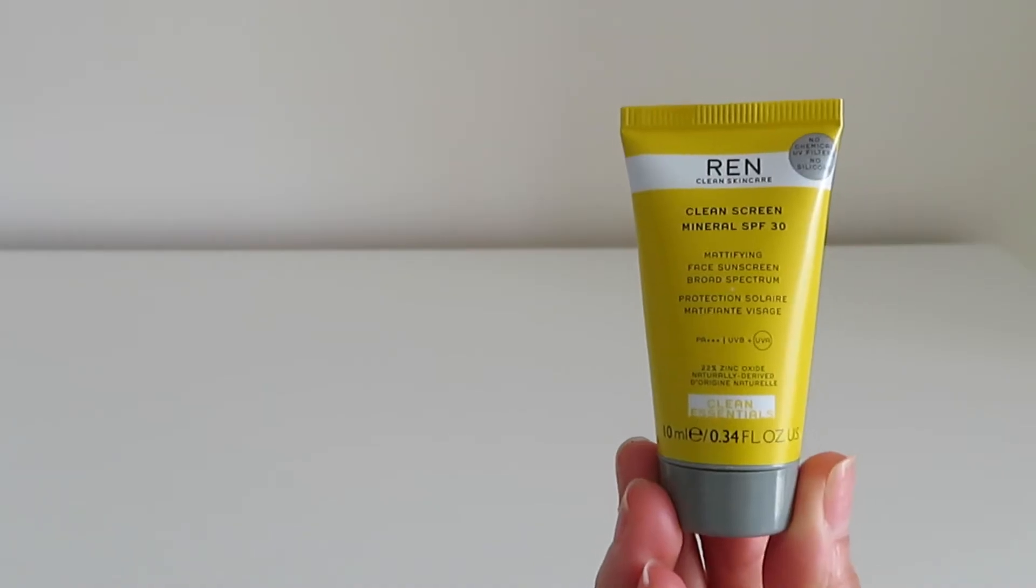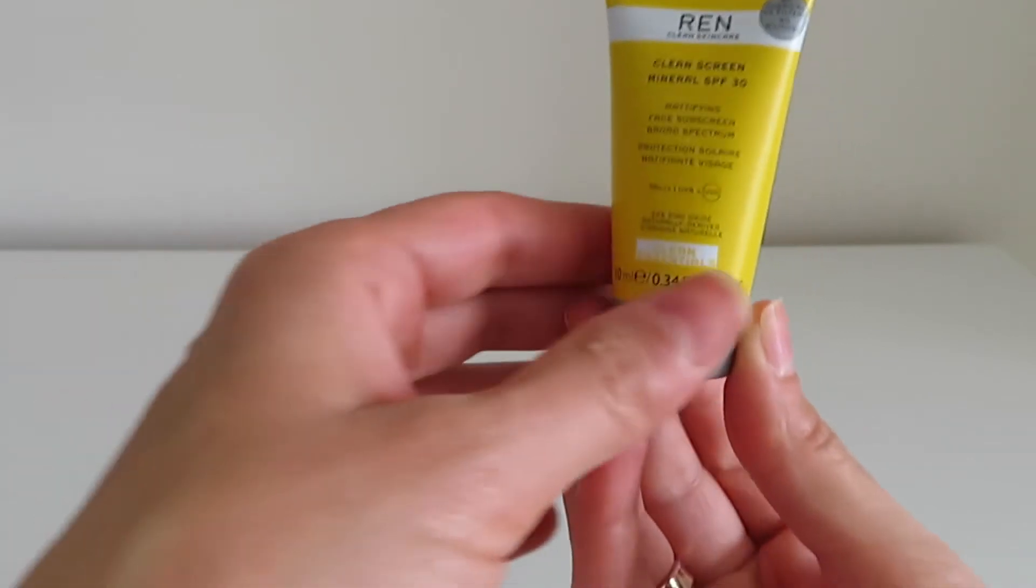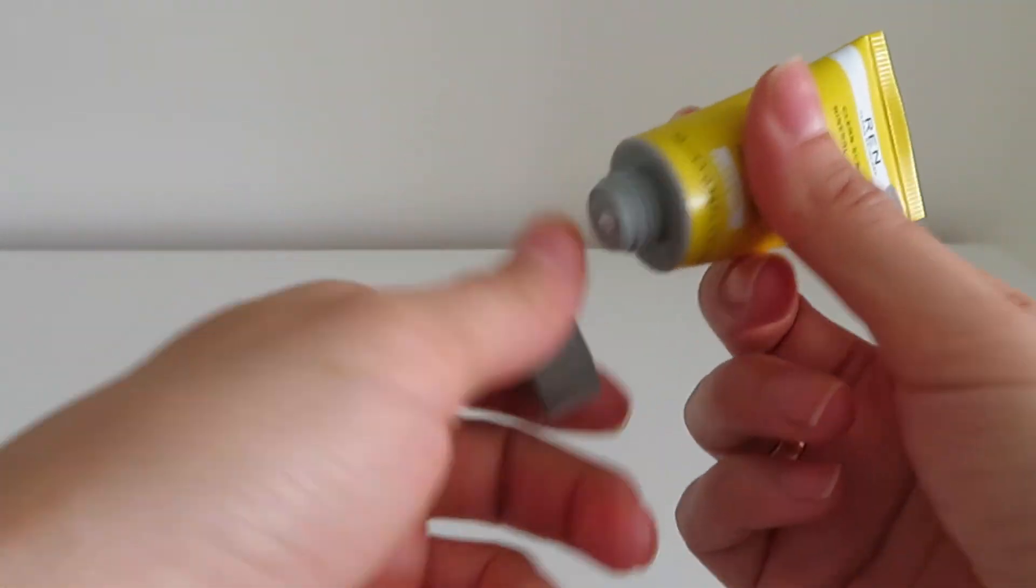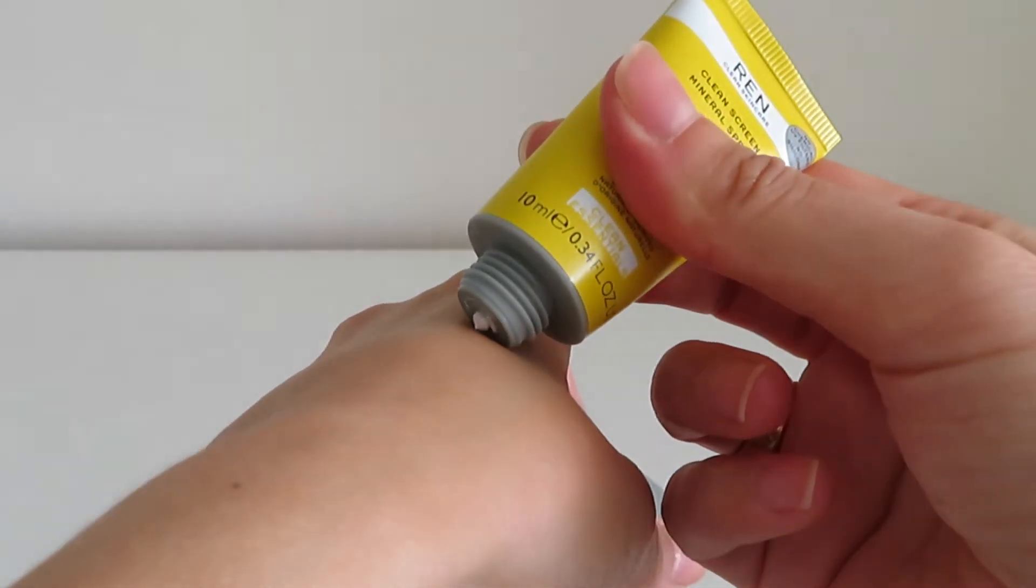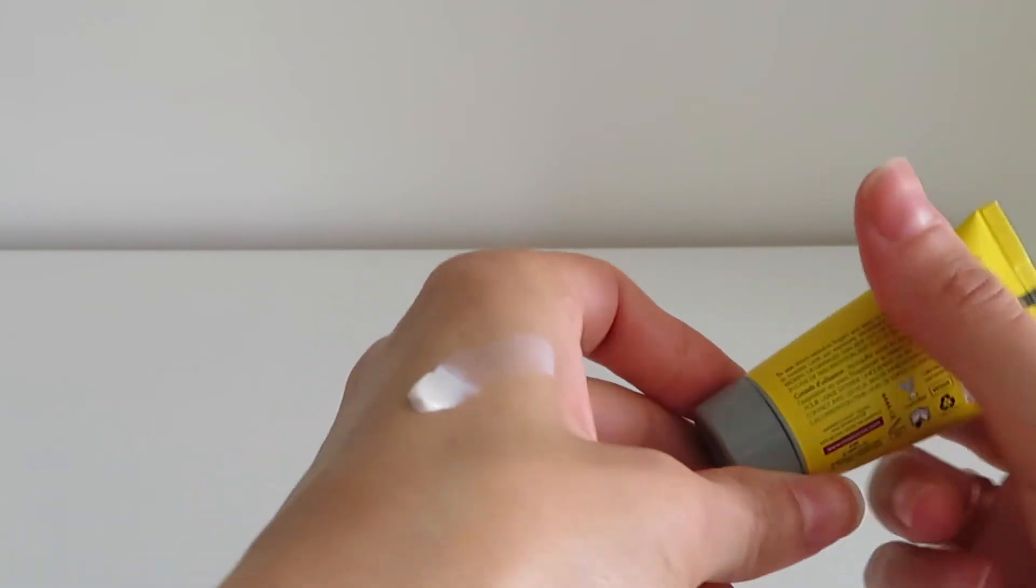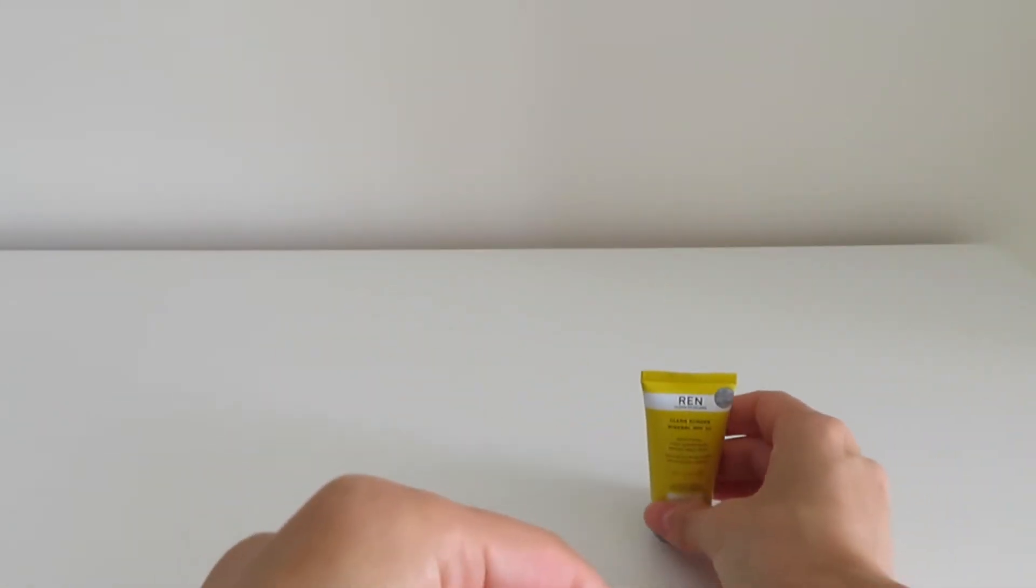First product that I want to show is this mineral sunscreen from REN. Clean Screen Mineral SPF 30 mattifying face sunscreen with no chemical filters and no silicones. My personal experience with this product isn't the best one. Because it's a mineral SPF, it leaves that white cast on my skin.